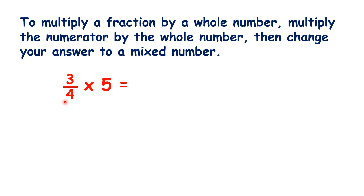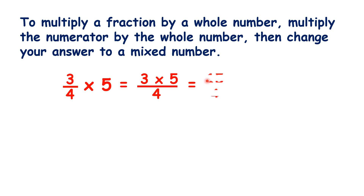So basically, if we have three quarters times five, we do the same thing and get the same answer as if we had three quarters of five. With fractions, times and of are basically the same thing. So we multiply three by five, which gives us 15, and then 15 quarters as a mixed number is three and three quarters.